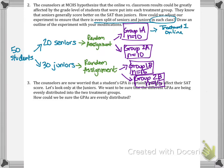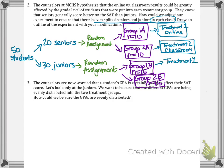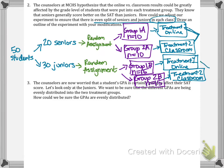Treatment 1 will be the online format — that's group 1A (10 seniors) and group 1B (15 juniors). Treatment 2 will be the classroom format — group 2A (10 seniors) and group 2B (15 juniors). This allows me to compare seniors to seniors, juniors to juniors, and then compare all together on their SAT scores.